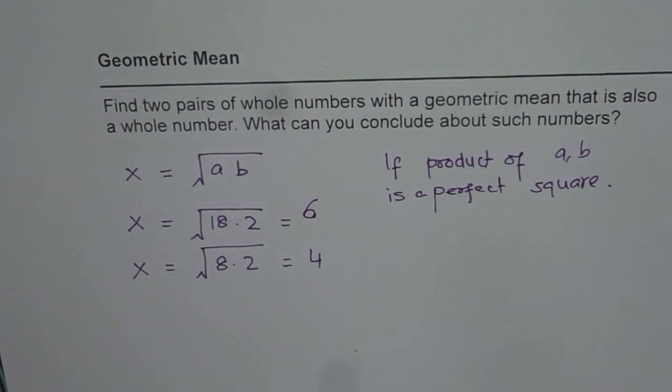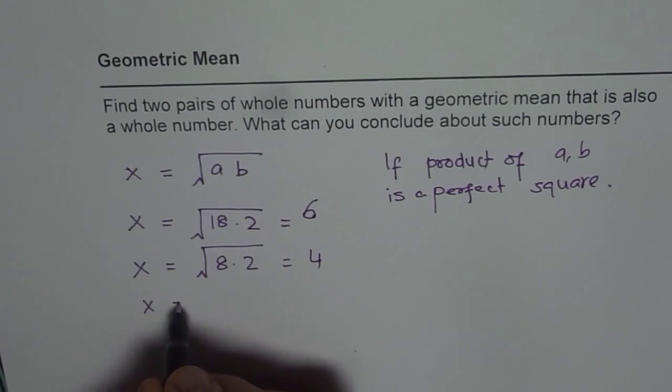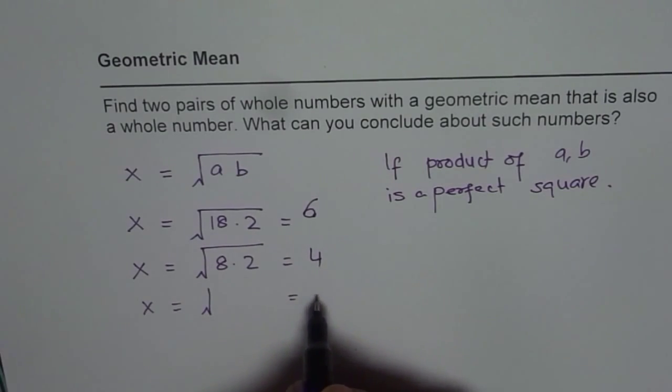So likewise, we can give many numbers. We need to find a perfect square to get the answer. So we can get x equals to square root of, let us say we want 64 here. So 64 is 8. So do reverse calculation.